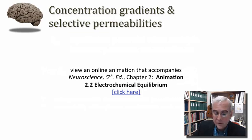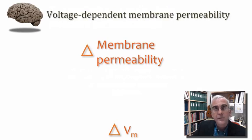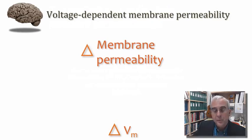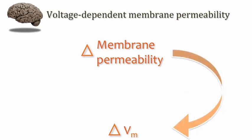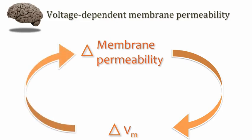Finally, before we get there, I'll just remind you that what we talked about last time is that changes in membrane permeability can have predictable consequences for the change in membrane potential. What we're going to try to explain beginning in this tutorial is how it is that changes in membrane potential can impact membrane permeability.